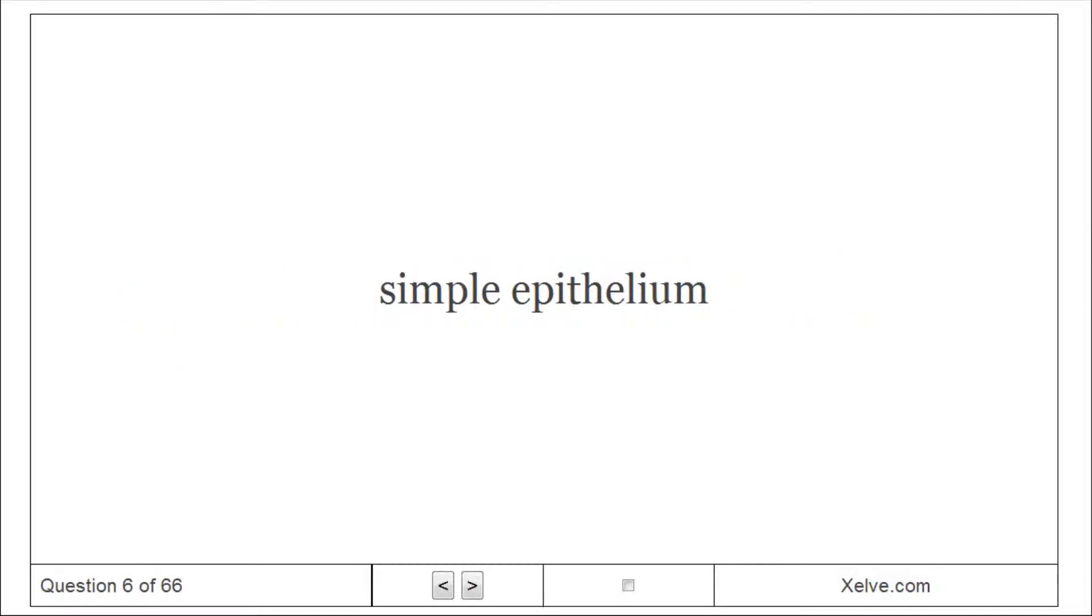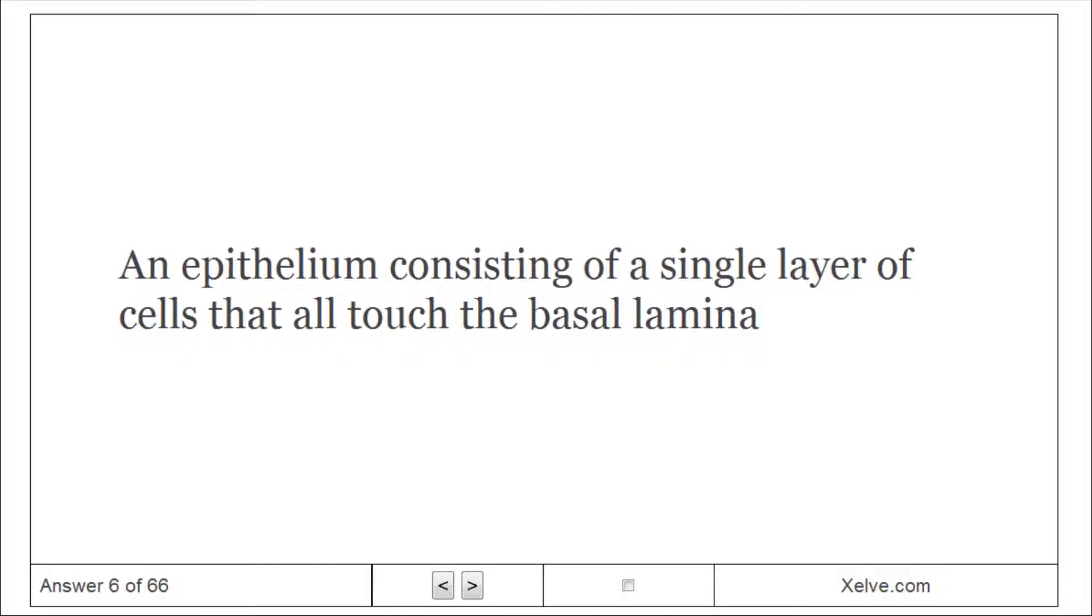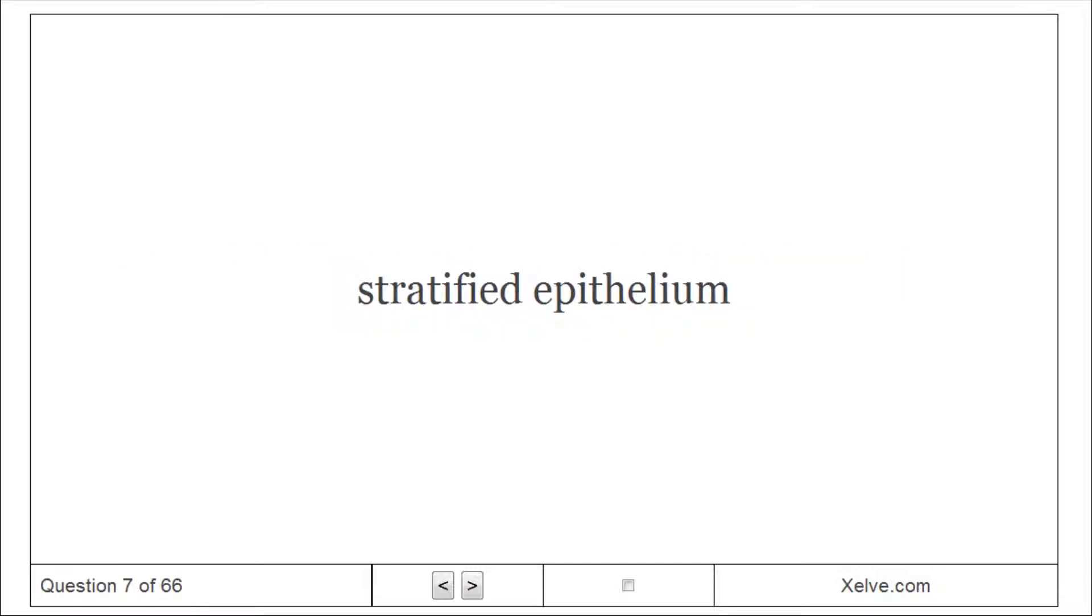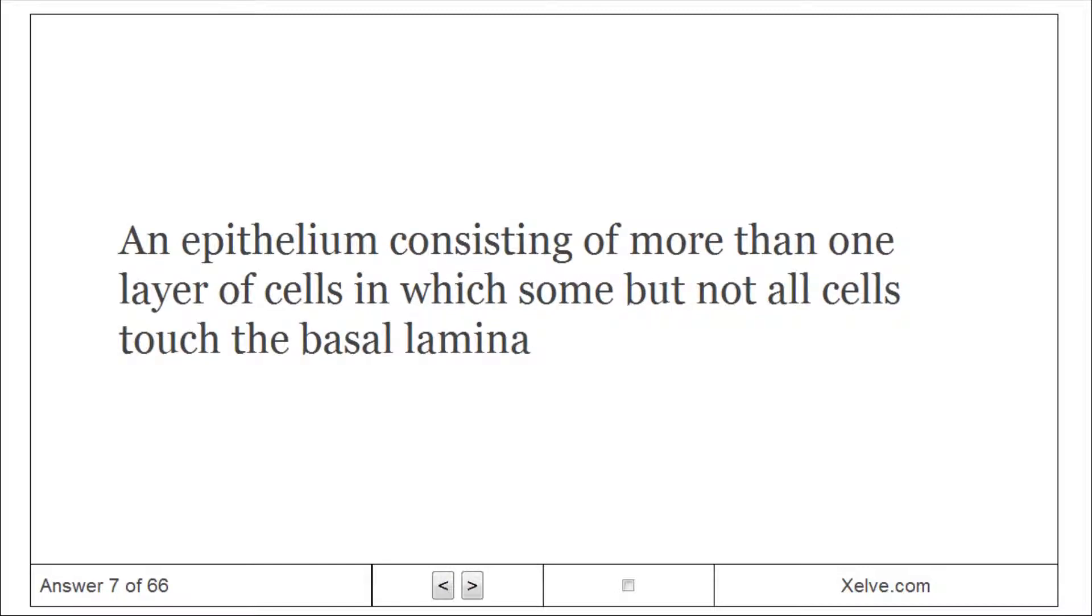Simple epithelium: An epithelium consisting of a single layer of cells that all touch the basal lamina. Stratified epithelium: An epithelium consisting of more than one layer of cells in which some but not all cells touch the basal lamina.